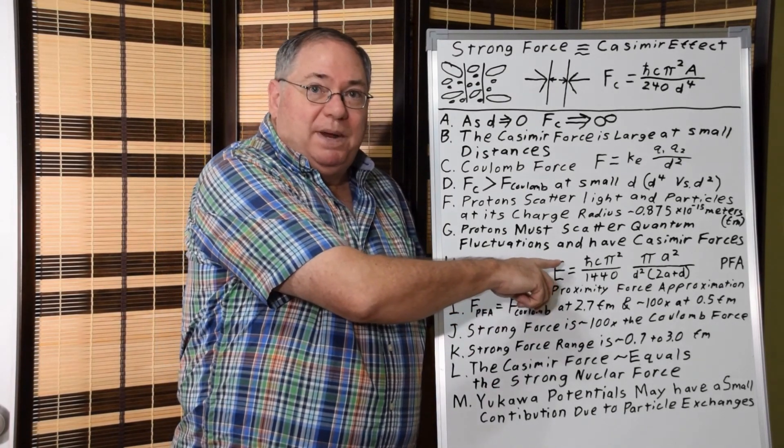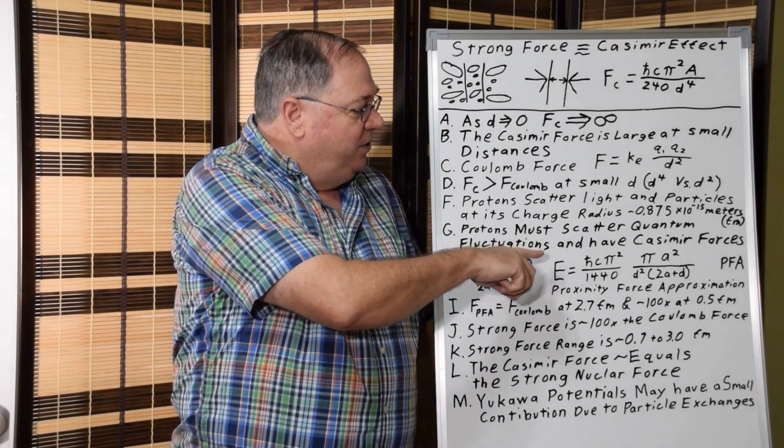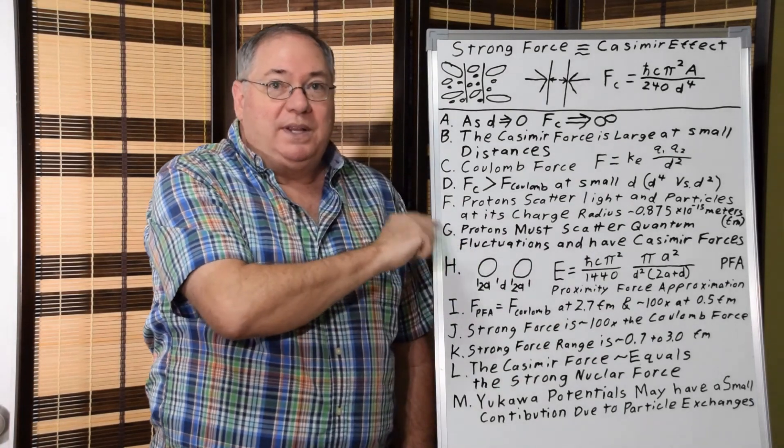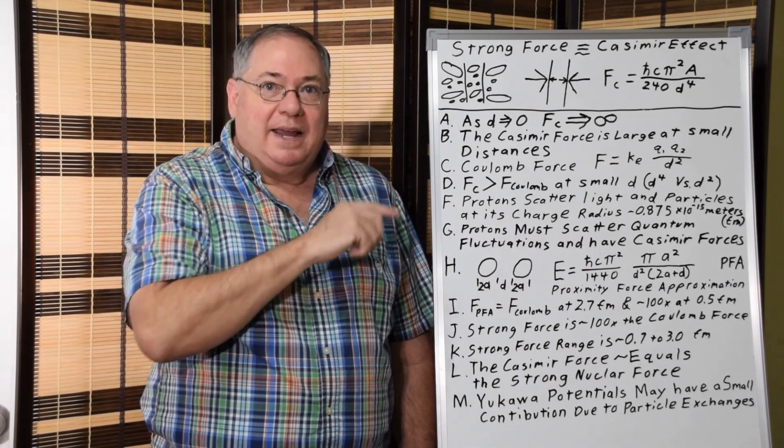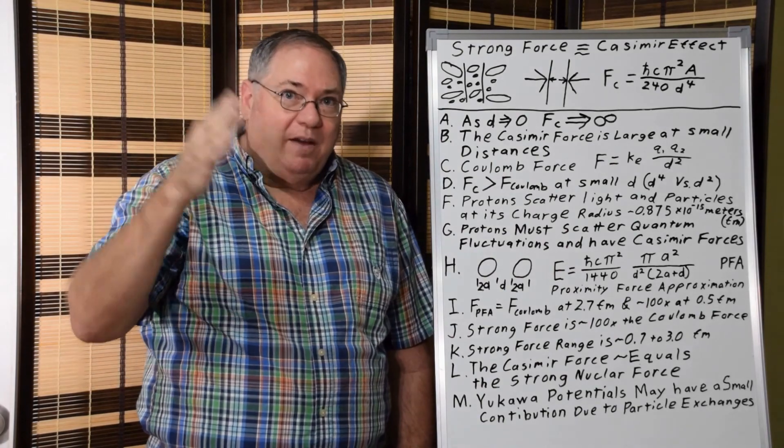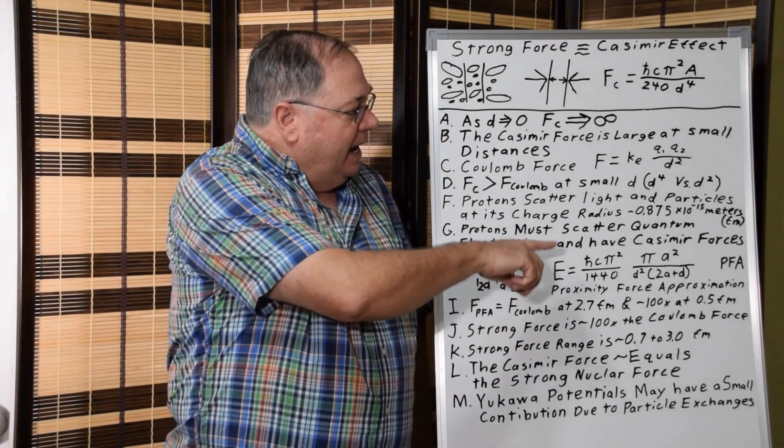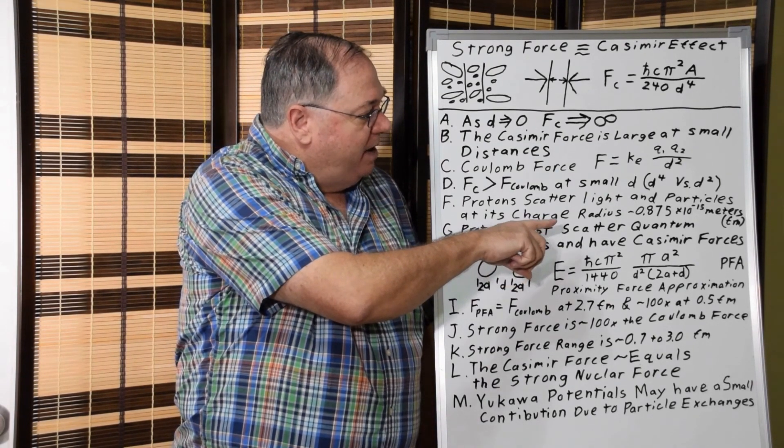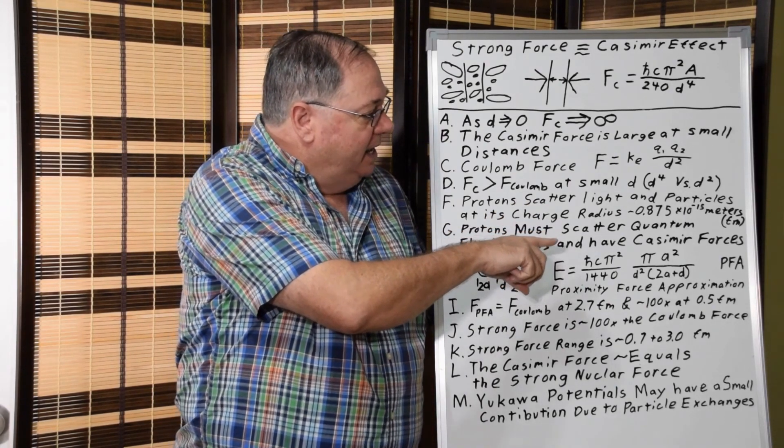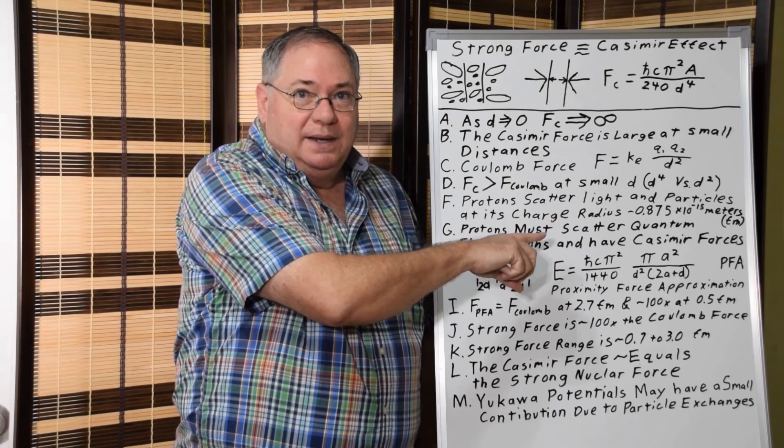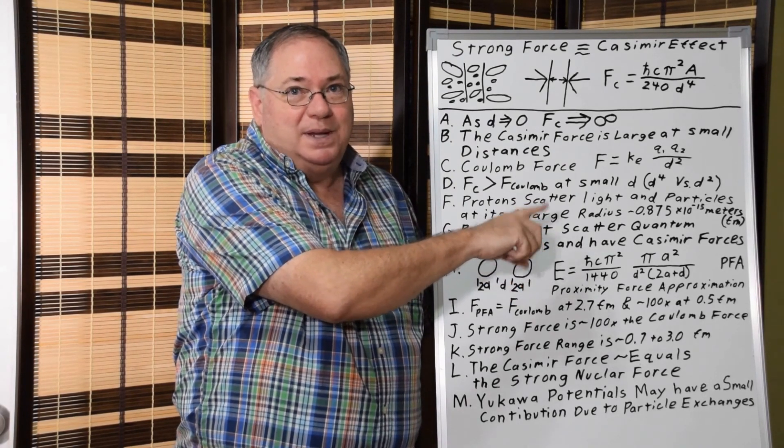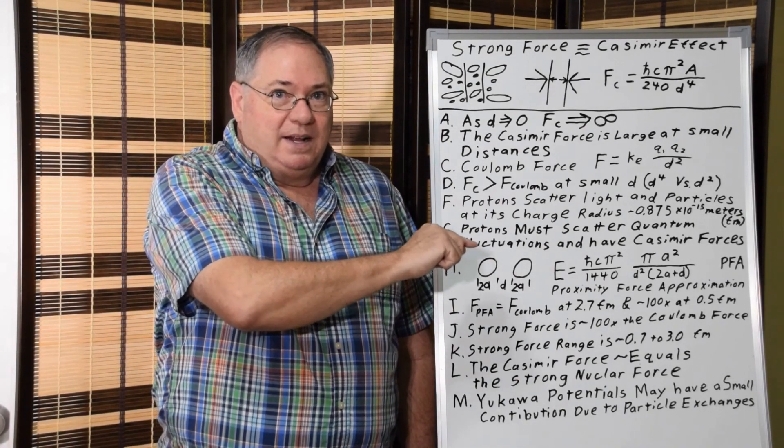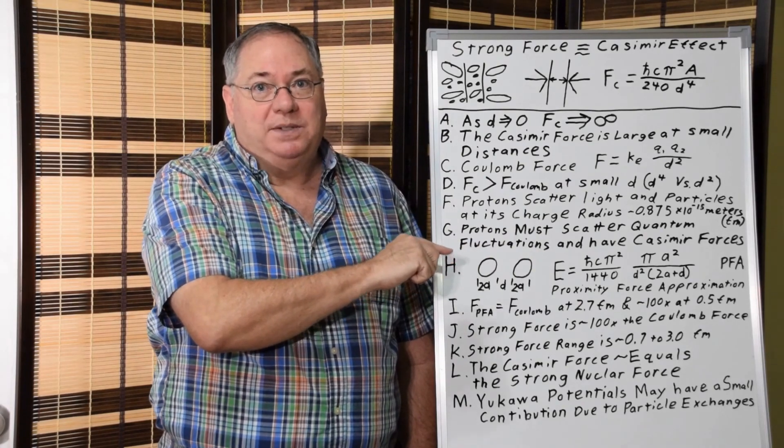Anyway, in the force approximation equation, the energy is related to the same set of constants, h bar c, pi squared, but it's over 1440. And that accounts for the geometrical change you have because of the curvature of the surfaces. And we also have a somewhat different term where we have pi a squared where a is the radius divided by d squared times 2a plus d. And so you notice in the energy term you have d three times instead of four times in the force term.